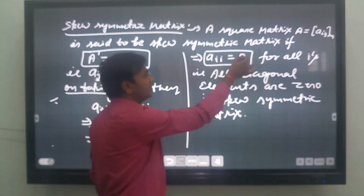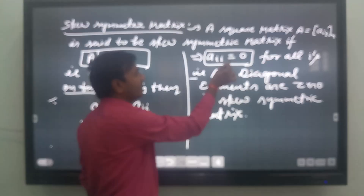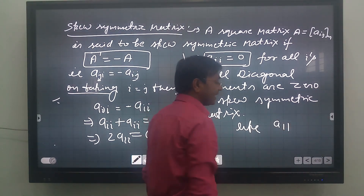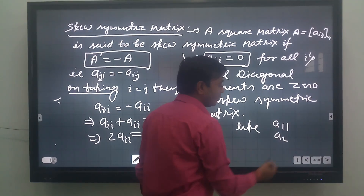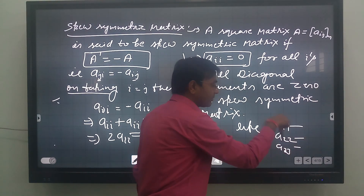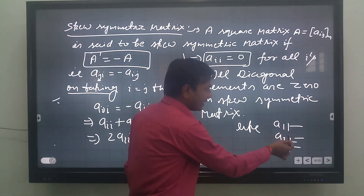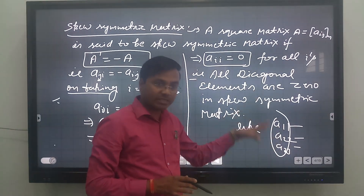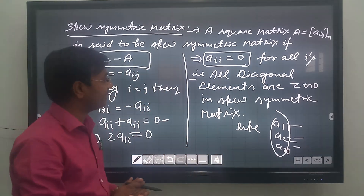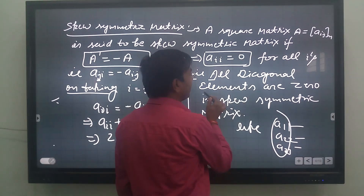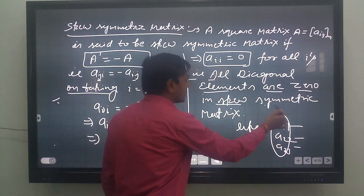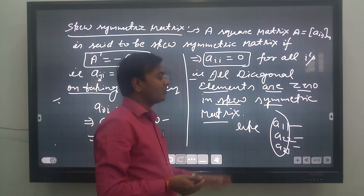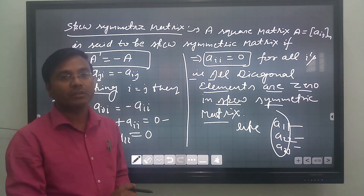This gives Aii = 0 for all i. Aii means same row and column indices — A11, A22, A33 — which are none other than the diagonal elements. So all diagonal elements are 0 in a skew-symmetric matrix. If asked what are the specific values of diagonal elements in a skew-symmetric matrix, the answer is 0.